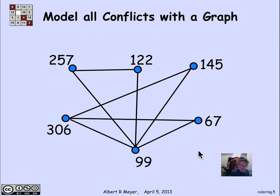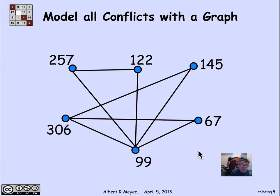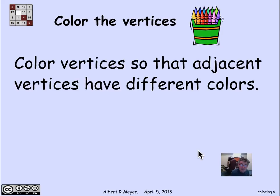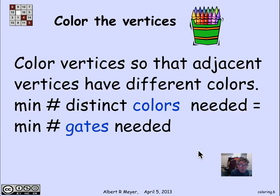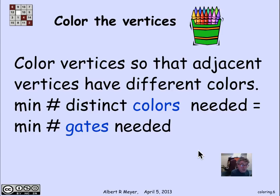Now we can talk abstractly about the coloring problem: assign colors to the vertices such that no two adjacent vertices have the same color. Adjacent vertices should have different colors. From the way we derived this graph from the aircraft schedules, the minimum number of distinct colors needed to color the graph corresponds to the minimum number of gates needed to serve the aircraft.